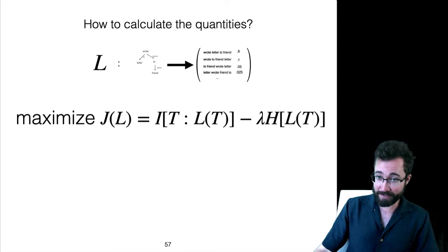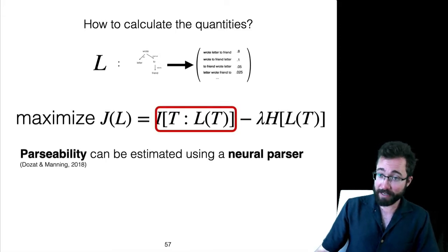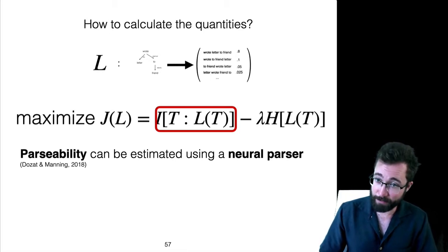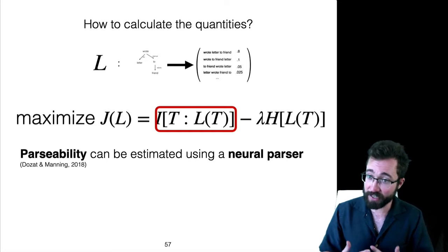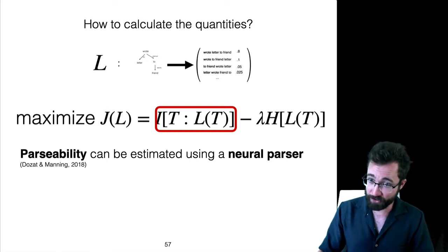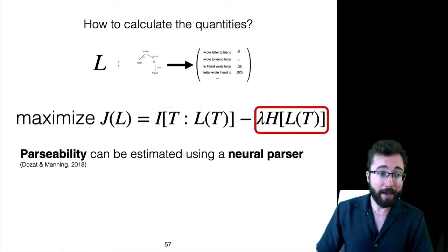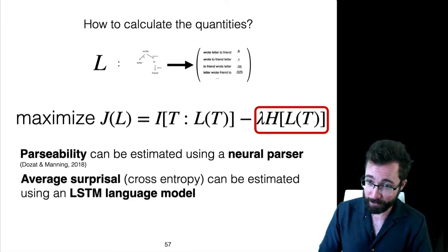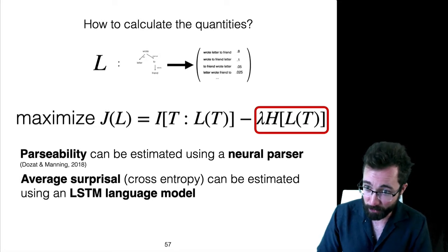How do you calculate these quantities? Modern NLP technology actually makes it possible to do both of these in reasonable ways. Parsability can be estimated using a neural parser, for example, the Dozat-Manning parser. That's just a general algorithm that recovers graphs from strings. Average surprisal can be estimated using an LSTM language model, an autoregressive language model with potentially noisy memory.